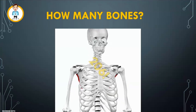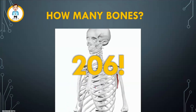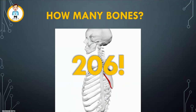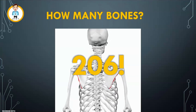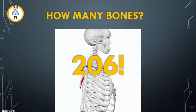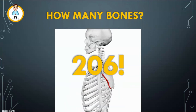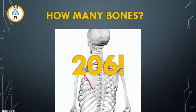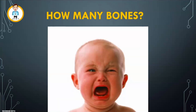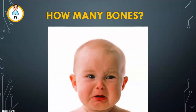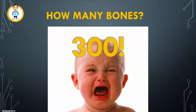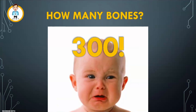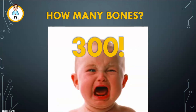In the human adult body there are 206 bones. 206. But here's a really interesting fact for you. When you were a baby, you actually have 300 bones. So how do we go from having 300 to 206?